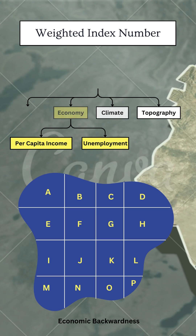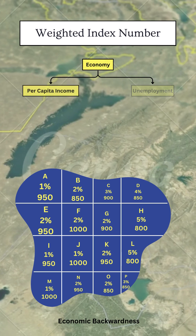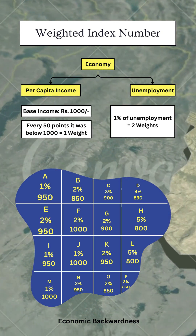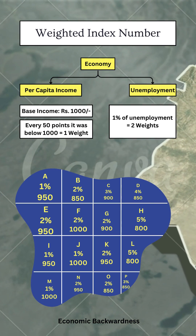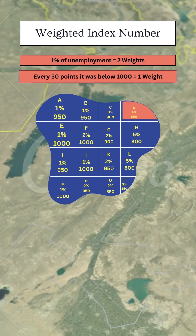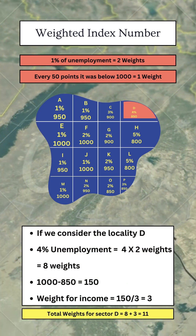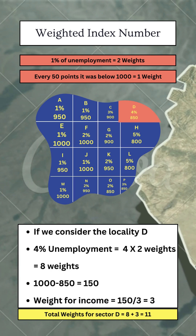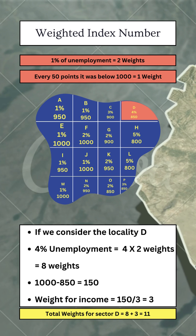For example, to identify a region of economic backwardness, we use parameters like the percentage of unemployment and per capita income. For every 1% of unemployment, we assign two weights. For every 50 points below a base of 1,000 in per capita income, we assign one weight. The higher the total weight, the more economically backward the area is.